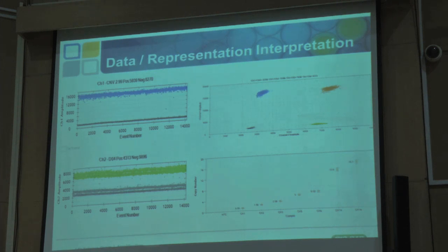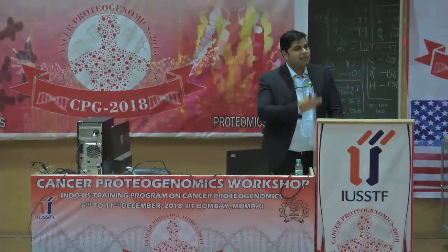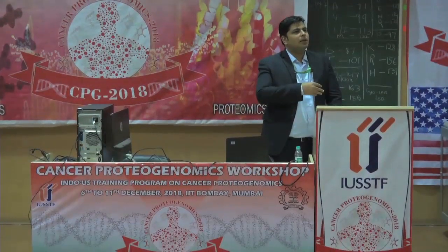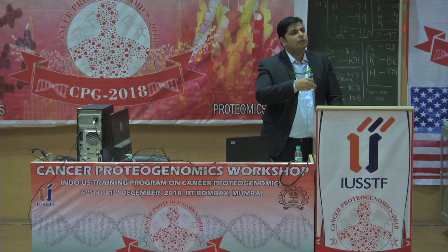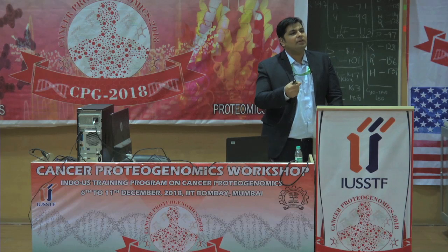For multiplexing beyond 2-plex assays, you need at least 30 to 50 base pair difference between amplicons. The reason single cell analysis is relevant here is because the amount of nucleic acid coming out of a single cell is very minimalistic, but the system is sensitive enough to capture even that minuscule amount of nucleic acid.